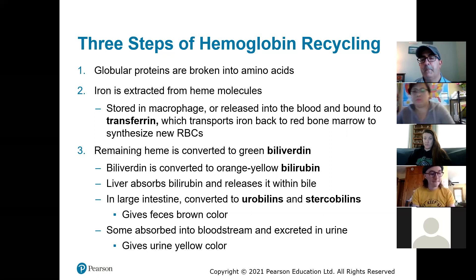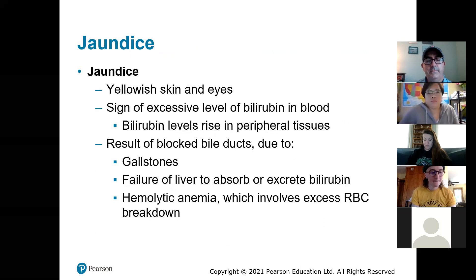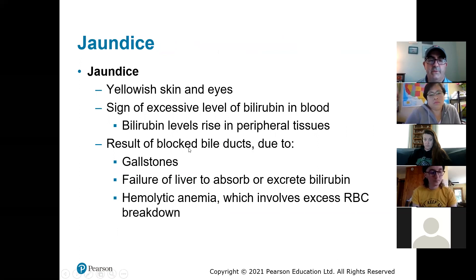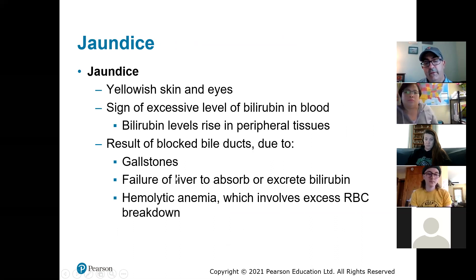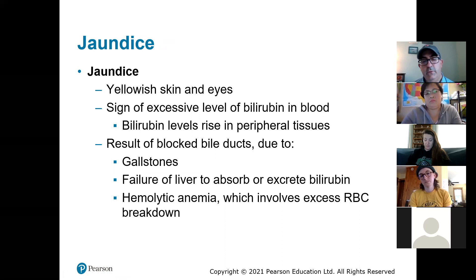Babies are often born slightly jaundiced and doctors will monitor that to make sure it goes away within an appropriate time. Causes of jaundice: basically bilirubin levels rising. It could be blocked bile ducts or gallstones preventing it from getting from the liver to the gall bladder, or failure of the liver to absorb the excess bilirubin, or it could be due to excessive red blood cell breakdown — all of a sudden your liver is breaking down more red blood cells than it should, giving you more bilirubin than you can secrete into your gall bladder.